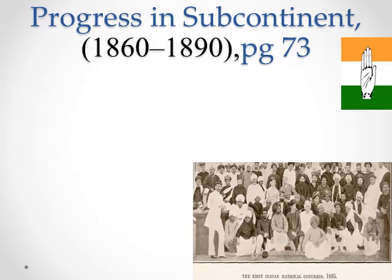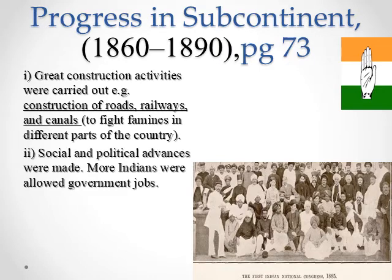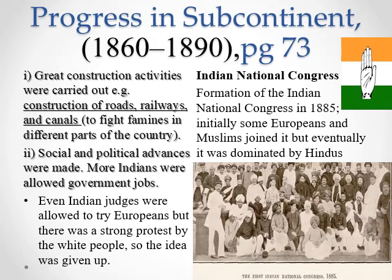On page number 73 you can see the heading 'Progress in Subcontinent.' This is the era between 1860 and 1890. Great construction activities were carried out — for example, construction of roads, railways, and canals — in order to fight shortage of food in different parts of the country. Social and political advances were also made. More Indians were allowed government jobs and even Indian judges were allowed to try Europeans, but there was strong protest by white people so the idea was given up. Indians also made their own political party named the Indian National Congress in 1885. Initially some European Muslims joined it, but the majority of educated Hindus were there, so the party was dominated by Hindus.